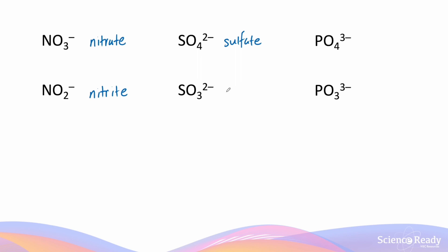SO3 2- has a similar name — it's known as sulfite ion. It has one sulfur but three oxygens, with the same overall charge of two minus. PO4 3- is known as phosphate ion, with one phosphorus, four oxygens, and an overall charge of three minus.